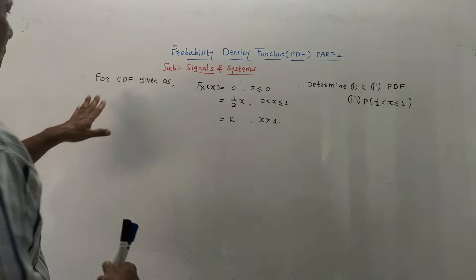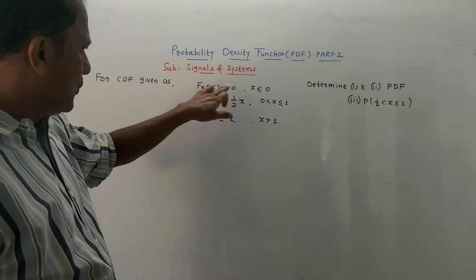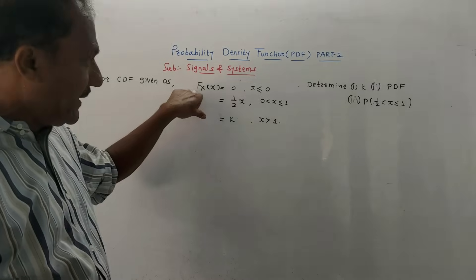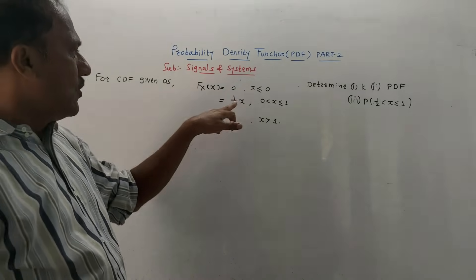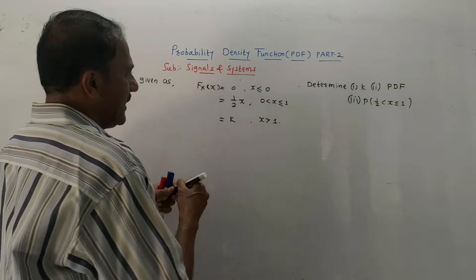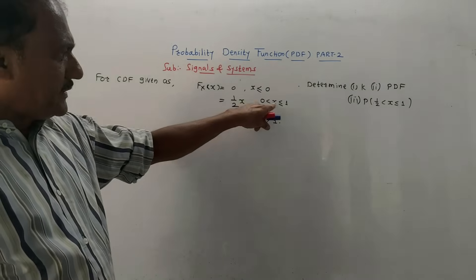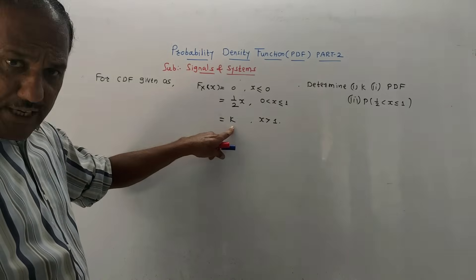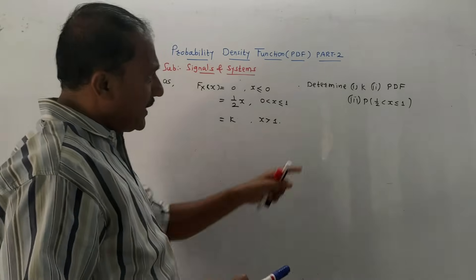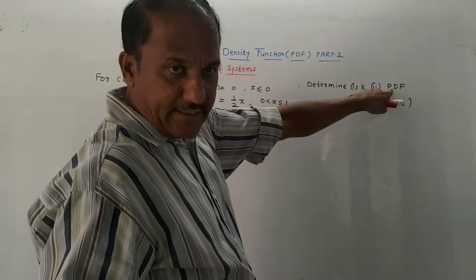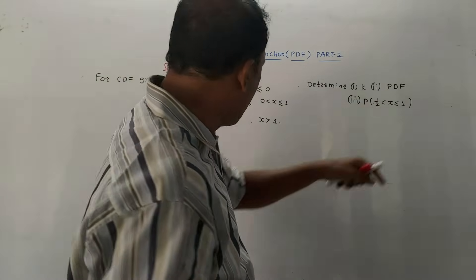Next numerical. For a CDF given as: capital F(x) equals 0 for X less than or equals to 0; one-half·X when X is between 0 to 1; and equals K for X greater than 1. Determine: first, the value of K; second, the PDF; and third, the probability in the range one-half to 1.